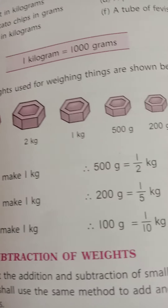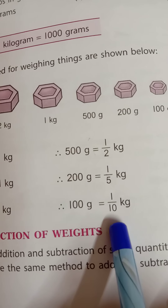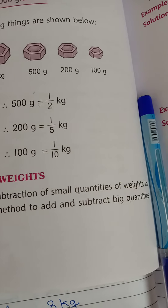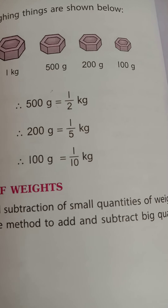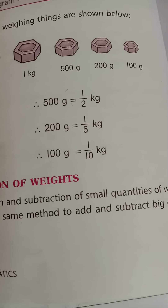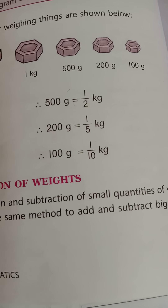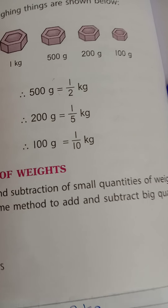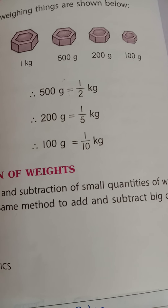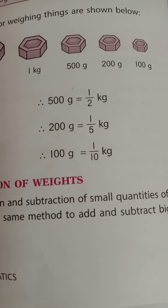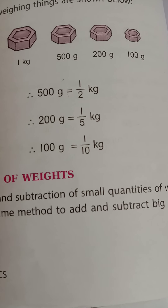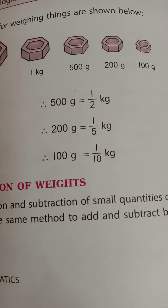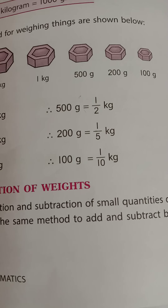We can say that 100 grams is equal to one-tenth of 1 kg. If we divide 1 kg by 10, we get a weight equal to 100 grams. If we divide the weight of 1 kg into 10 equal parts and take only 1 part, that one part will weigh equal to 100 grams. So, one-tenth of 1 kg is equal to 100 grams.